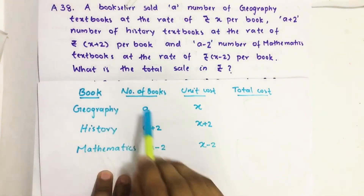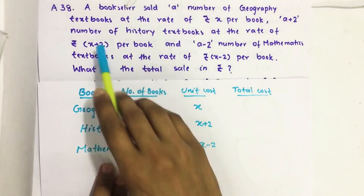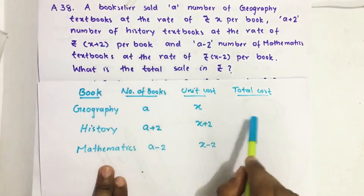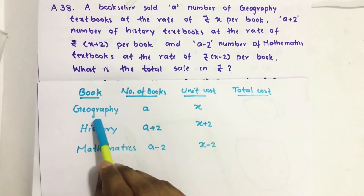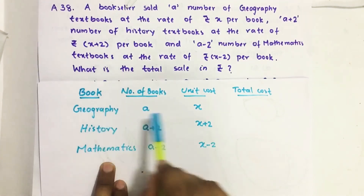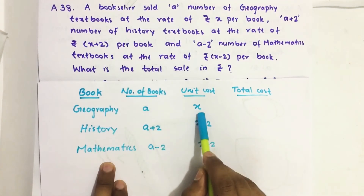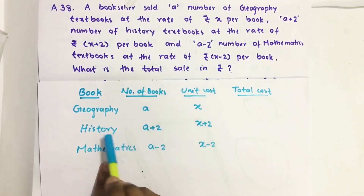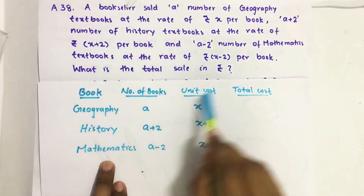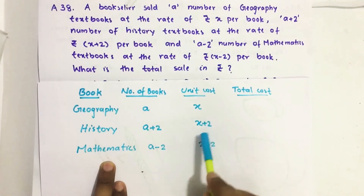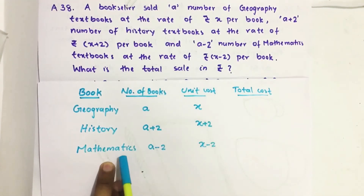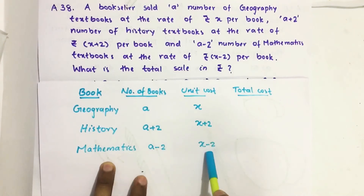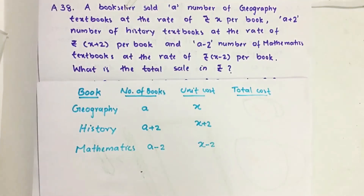Given data: a number of geography books with unit price x. Similarly, a plus two number of history books with unit price x plus two. A minus two number of mathematics books with unit price x minus two.